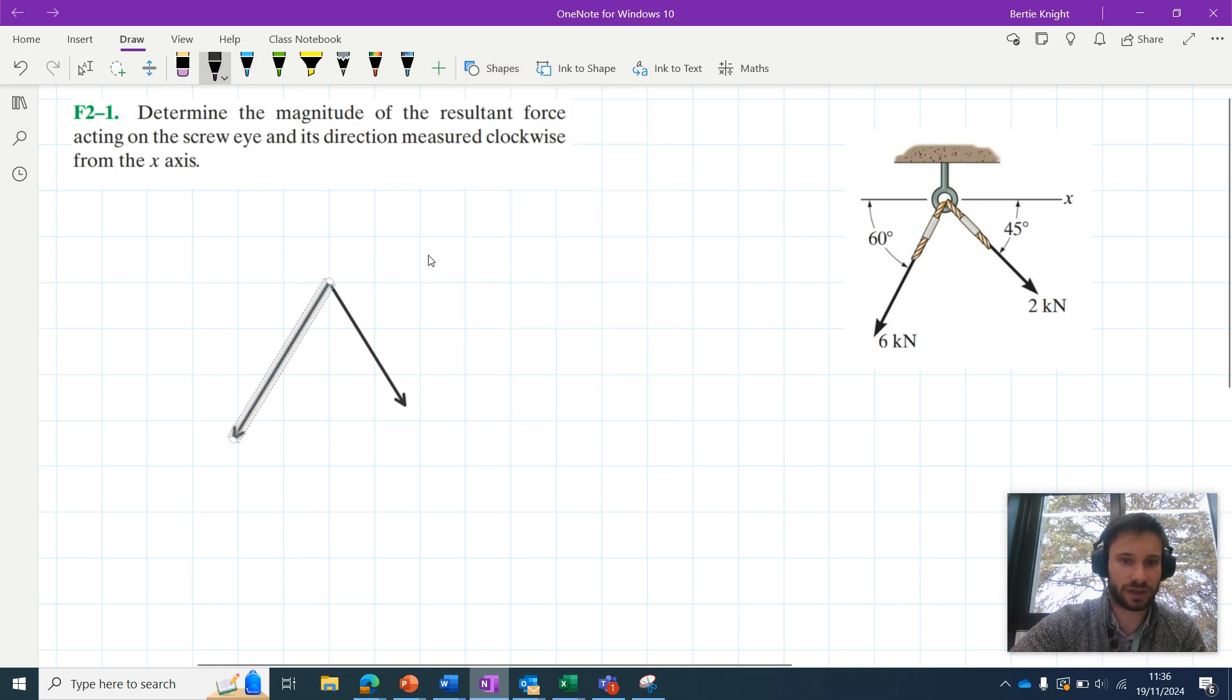Let's add some geometry to this. So you've got the x-axis here, and let's also add these angles. So you've got this 45 degree angle here and you've got this 60 degree angle here, and let's add the magnitudes of these forces: the 6 kilonewton force here and this 2 kilonewton force here.